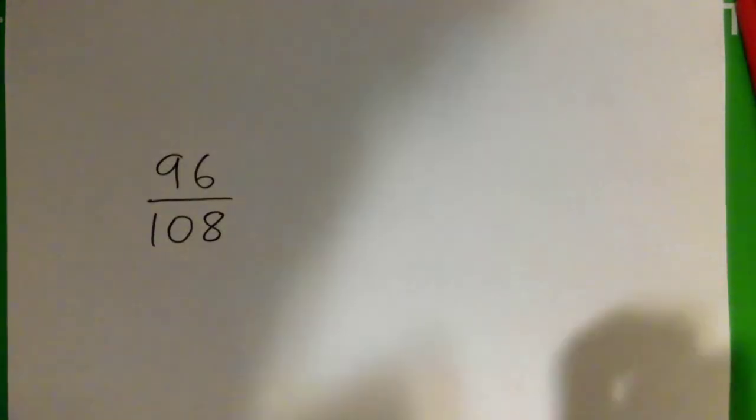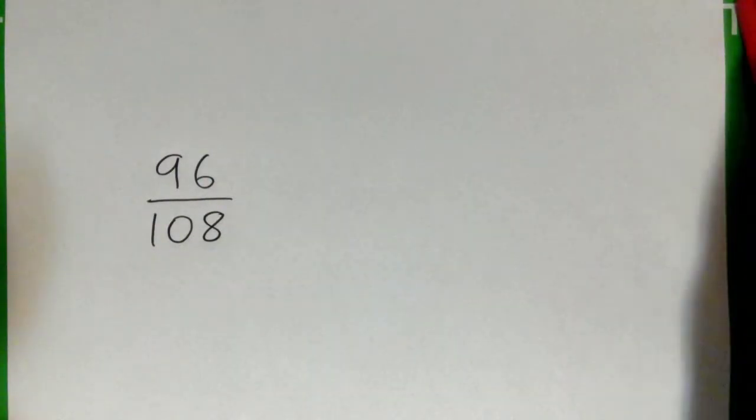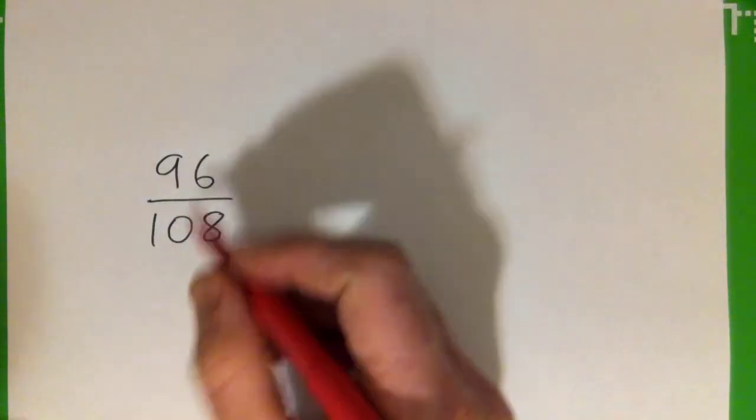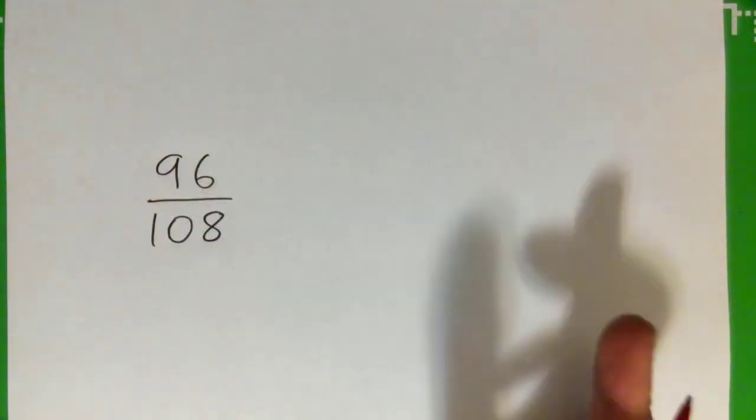We could try 96 over 108. We've got to simplify it, so we could try 6 into the top and bottom. So here's one way to do it, an easy way.